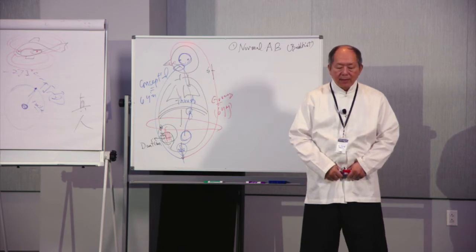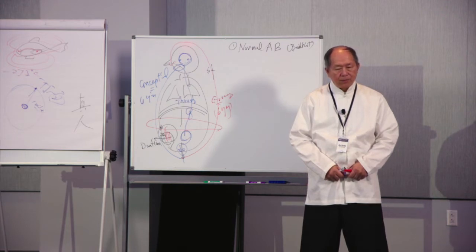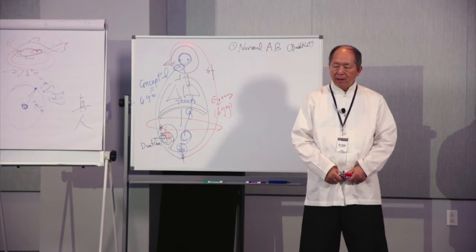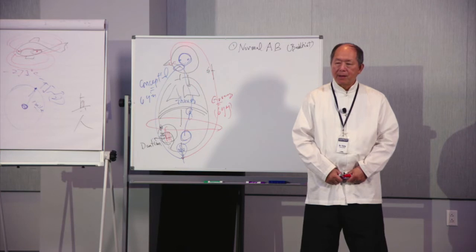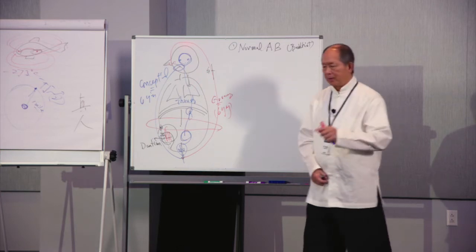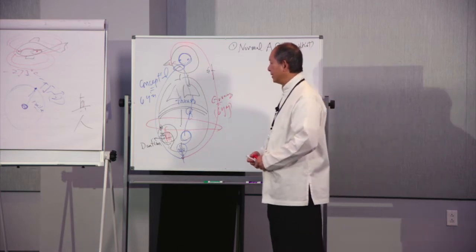Now inhale, abdomen out, perineum down. Try to feel sensational feeling in the groin area. Exhale, abdomen in, and perineum up. This is called abdominal breathing, the normal abdominal breathing.